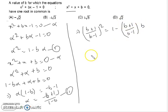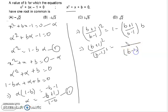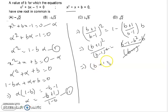After taking LCM and simplifying, we get (b + 1)² / (b - 1)² = 1 - b · (b + 1)/(b - 1). After taking LCM and doing the multiplication, we get (b + 1)² = (b - 1) · (1 - b) · (b - 1), and after simplification the b terms cancel.